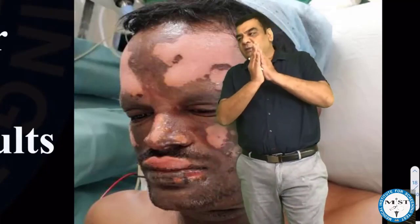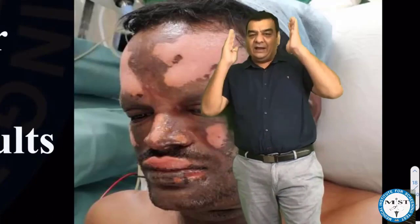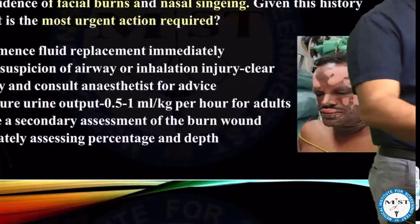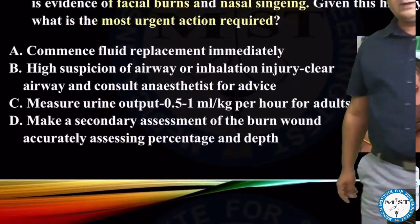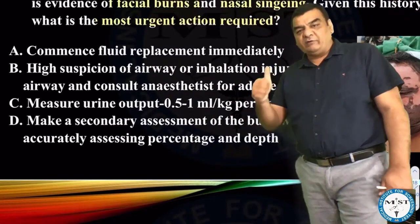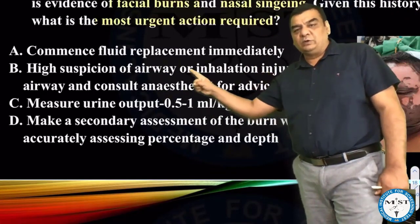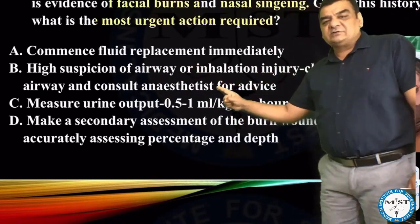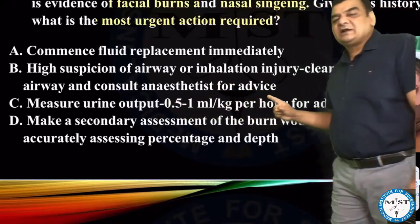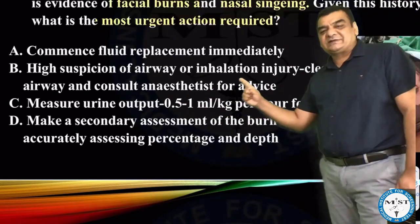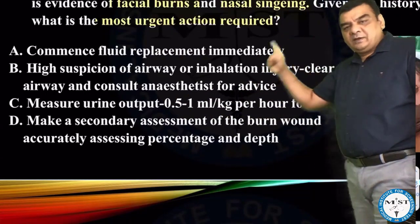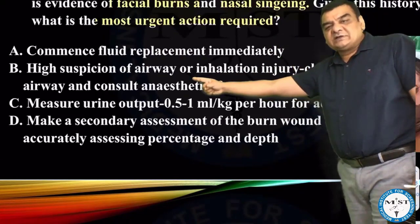If we take a look at the primary survey, ABC is going to be very crucial. Let's check if any option is related to airway. Option A: commence fluid replacement immediately — yes, we know we have to give fluids, so we cannot rule this out. Option B: high suspicion of airway or inhalation injury — clear the airway and consult the anaesthetist for advice. Looking at the term nasal singeing, I am focusing on this airway option.